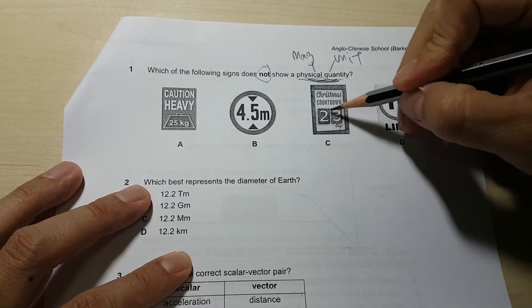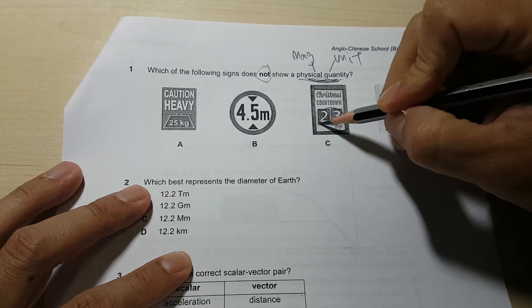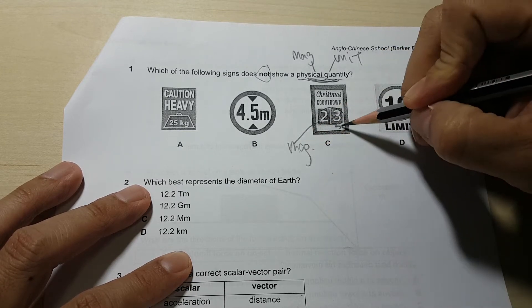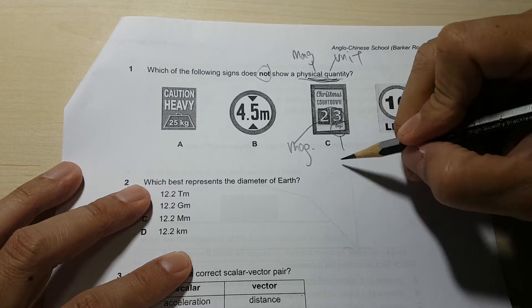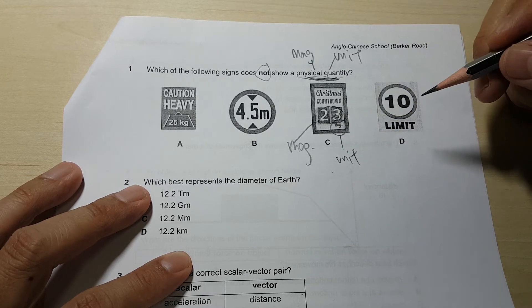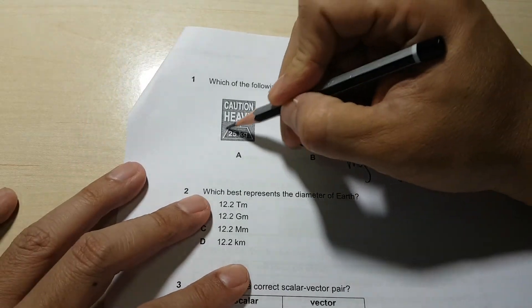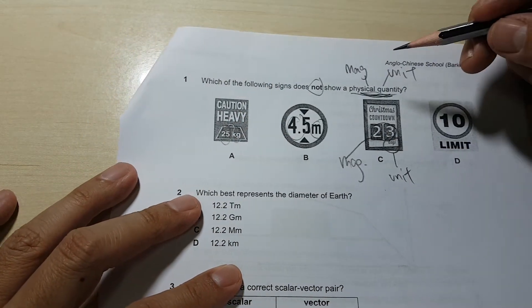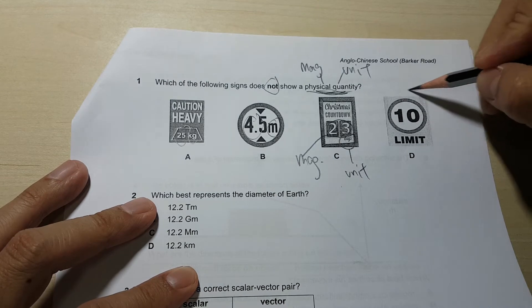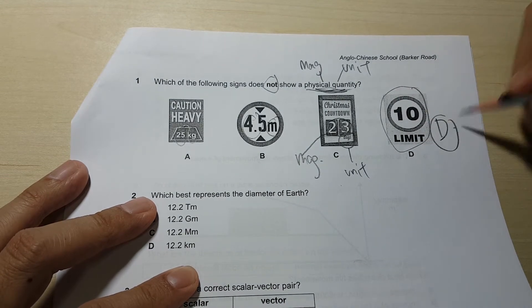Most of you chose this one. So this one has got a magnitude, actually there's the days here - the days here is simply the unit. It can be days, it can be hours, seconds and so on. So all this has got magnitude and unit, 25 and kilogram. So this leaves us with only the answer D.